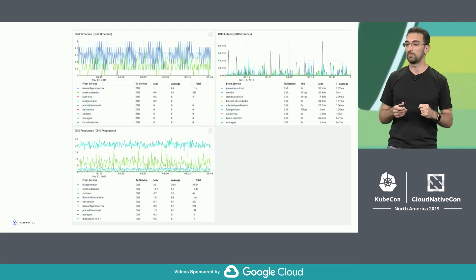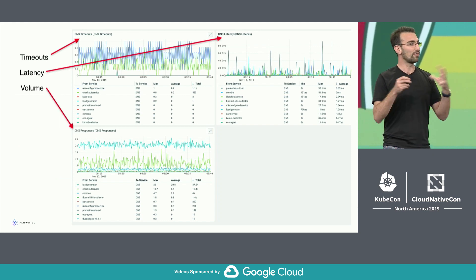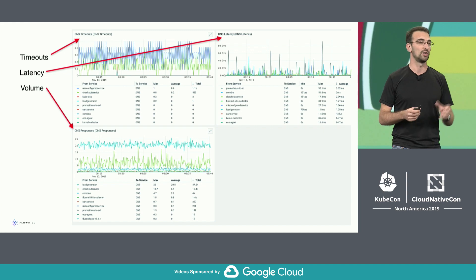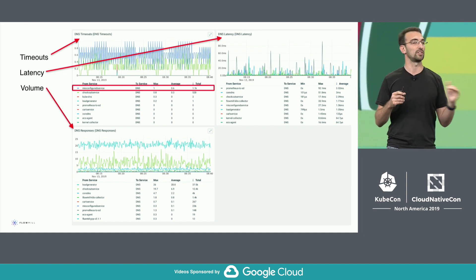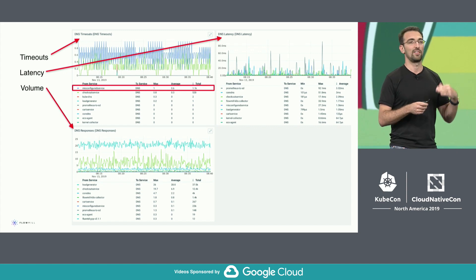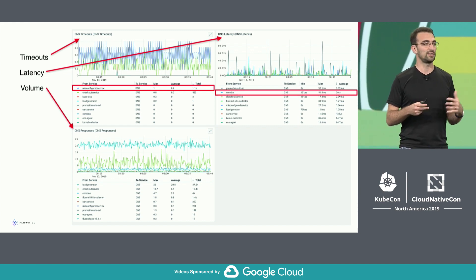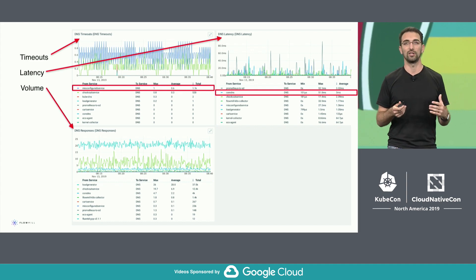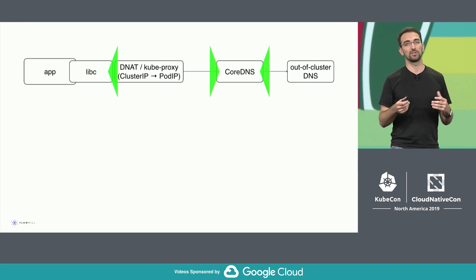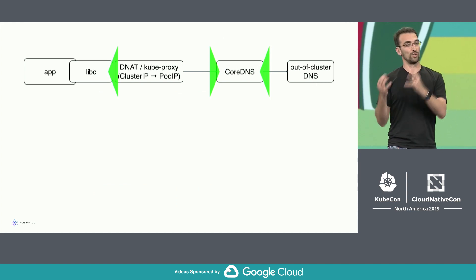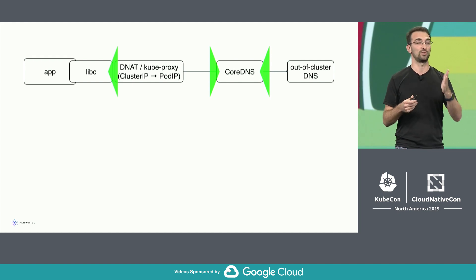Here is an example dashboard with timeouts, latency, and volume, and all of the data in this dashboard is per-service. You can see, for example, a misconfigured service that experiences a lot of DNS timeouts. CoreDNS is also a container running on Kubernetes, so you can get visibility into CoreDNS as well. This technique enables both CoreDNS visibility and visibility into how applications perceive DNS.